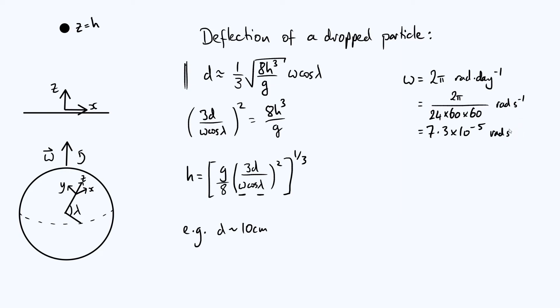All right, and then what about lambda? Well of course that just depends on where you do this experiment, so let's just take a value. I'm going to take lambda to be 51.5 degrees, that's the latitude of London where I am.